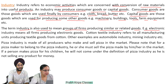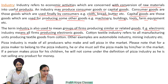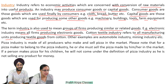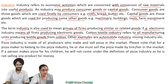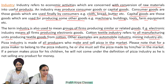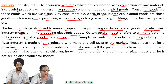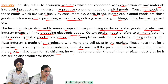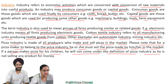Cotton textile industry refers to all manufacturing units producing textile goods from cotton. Other examples are automobile industry, mining industry, etc. The pizza industry is made of all producers who make and sell pizza in the market. Please note that for a pizza maker to belong to the pizza industry, he or she must sell the pizza made by him or her in the market. If a person makes pizza only for his children, he will not come under the definition of the pizza industry as he is not selling any product for money.